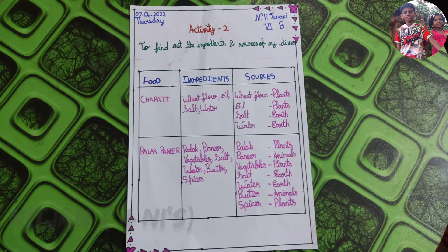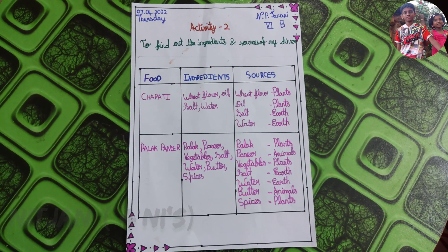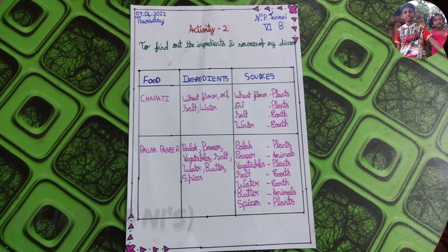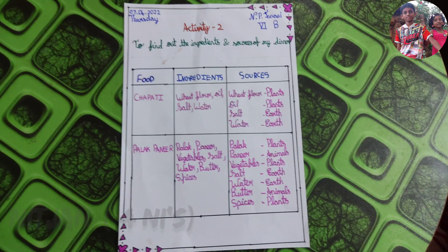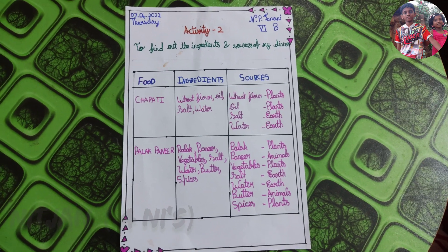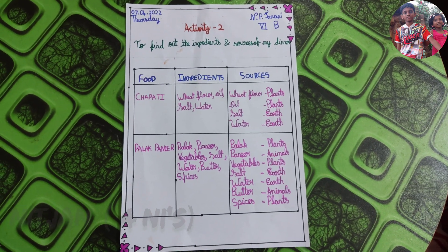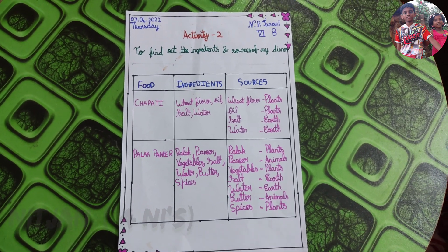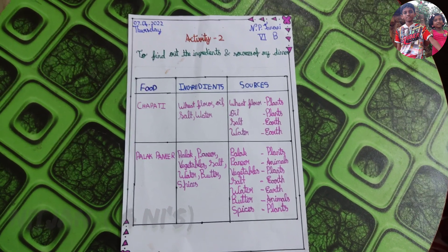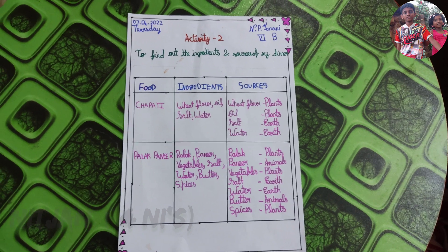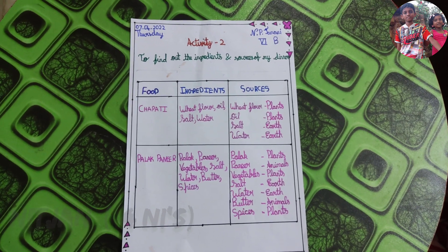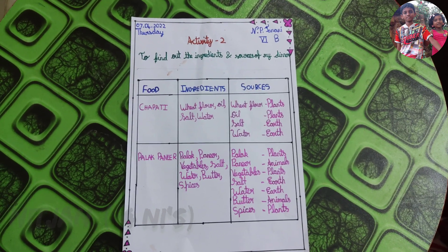Hi guys, this is my science activity. The topic name is to find out the ingredients and sources of my dinner. Food, ingredients, sources.